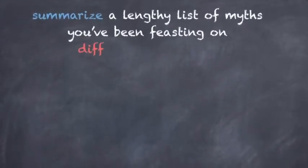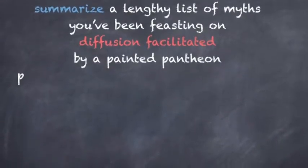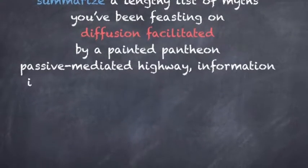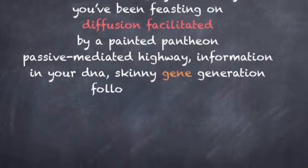Summarize the life, he looks amiss. You've been feasting on diffusion facilitated by a painted pantheon. Passive-mediated highway, information in your DNA, skinny gene generation.